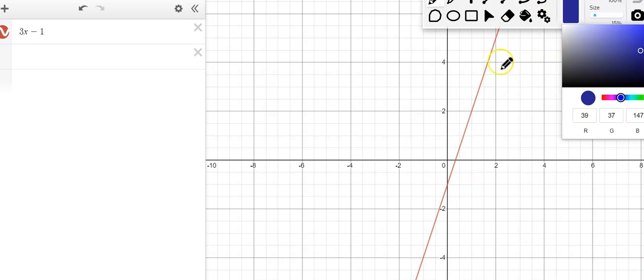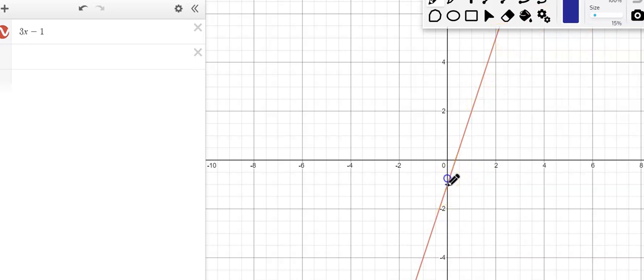There are certain points on this graph that we can look at and see, like right there. That's the point zero, negative one.